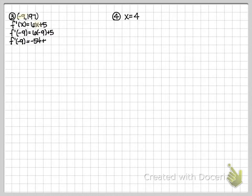If I go through and do that, I'm going to get negative 54 plus 5, which is negative 49. So what this is saying is at this specific point, negative 9 comma 197, the slope of the tangent line is negative 49.